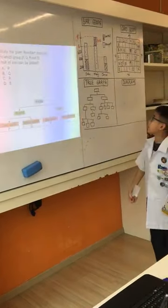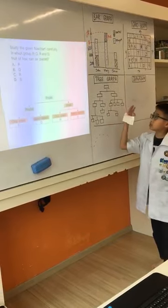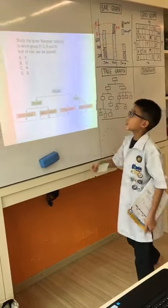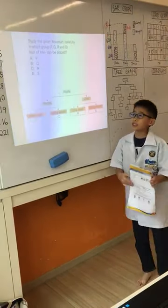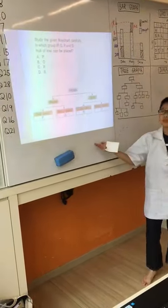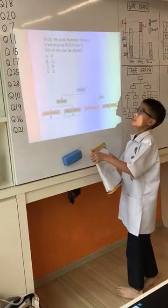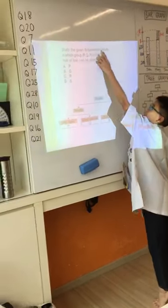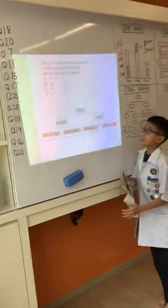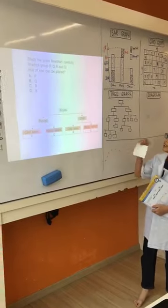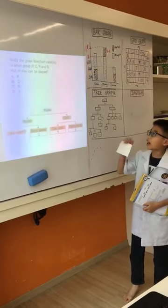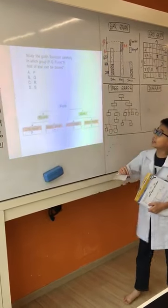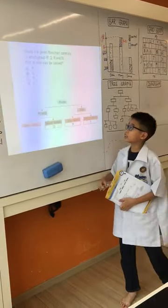Now, we are talking about tree graph. Here, this is our example. Study the given flow chart company. In which row P, Q, R, and S — row of kiwi can be placed.